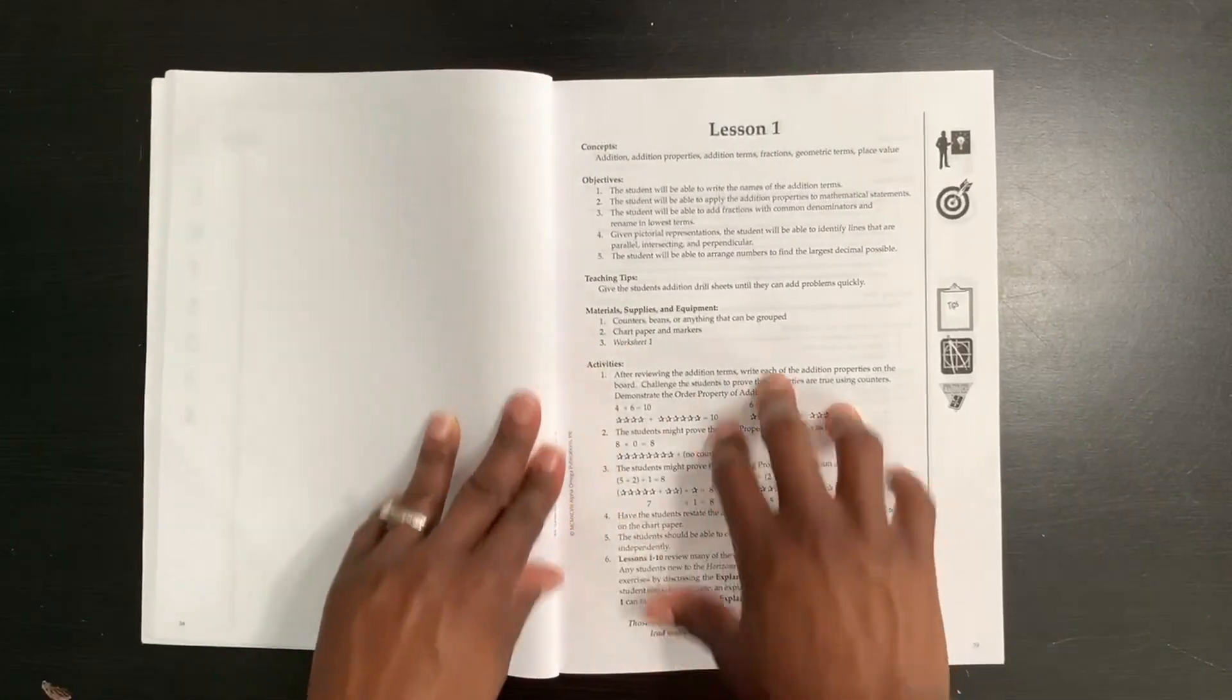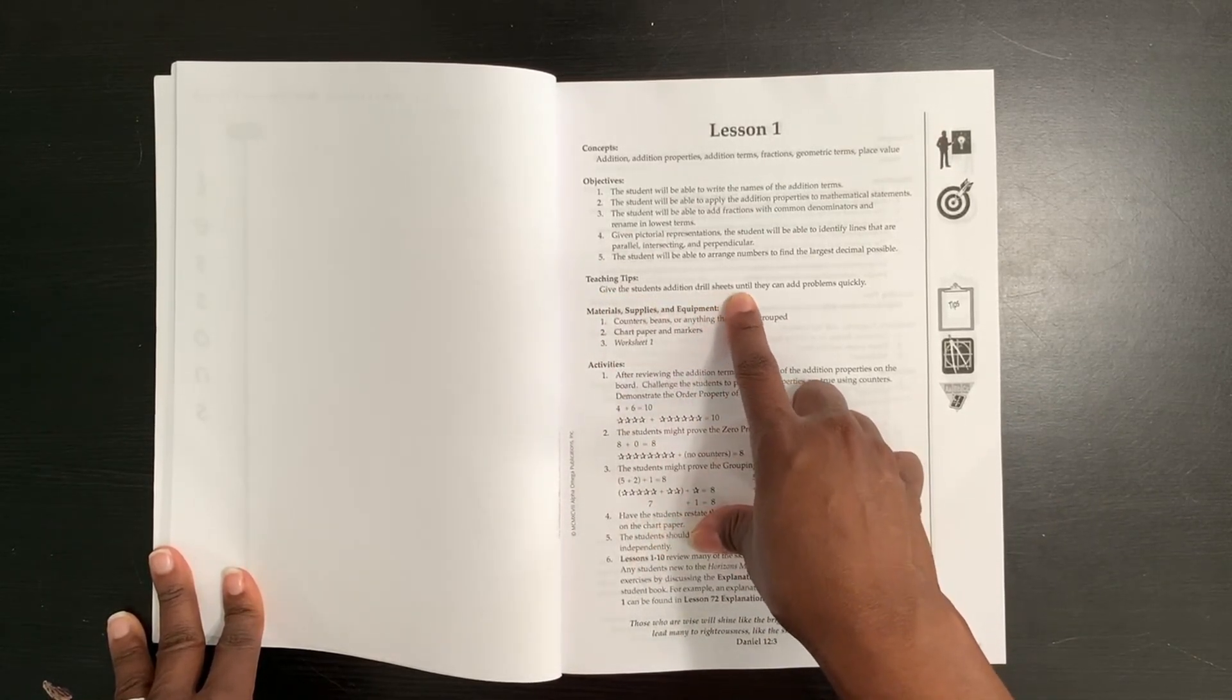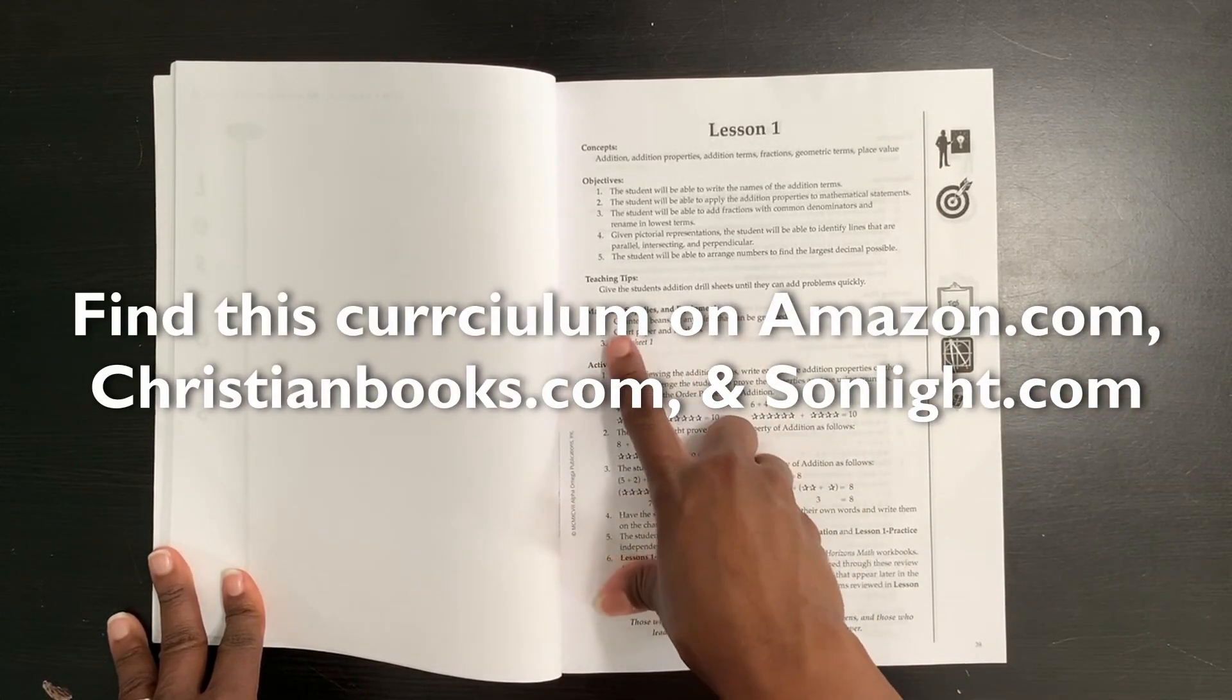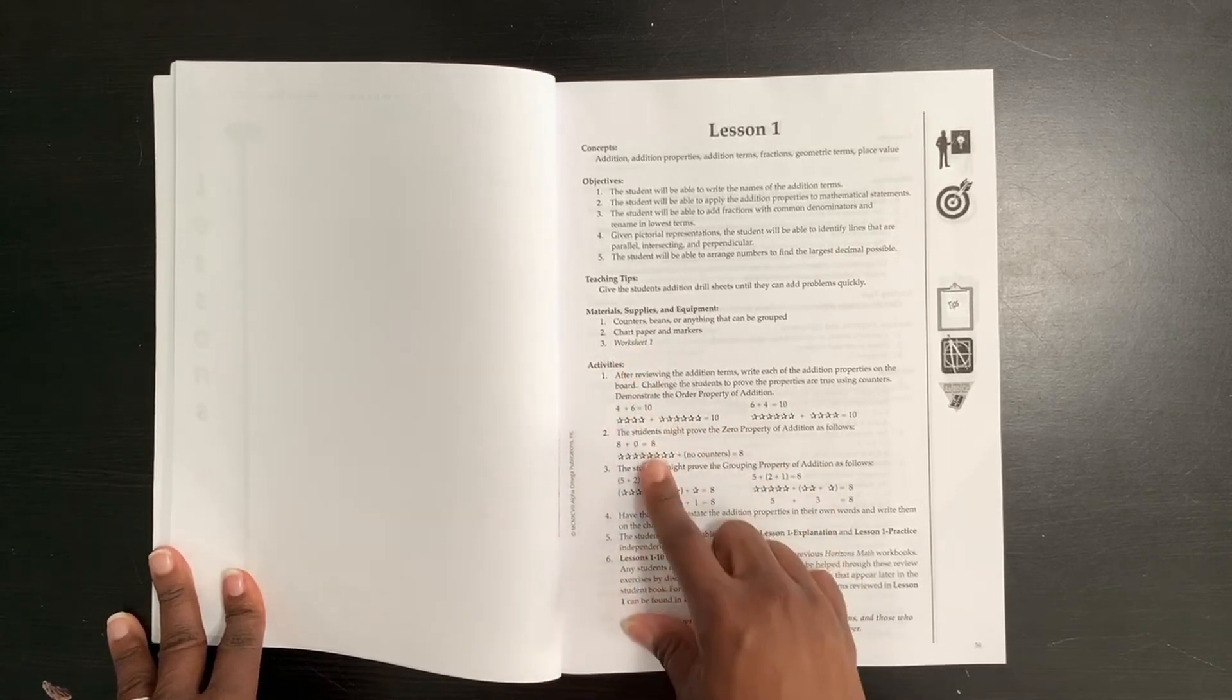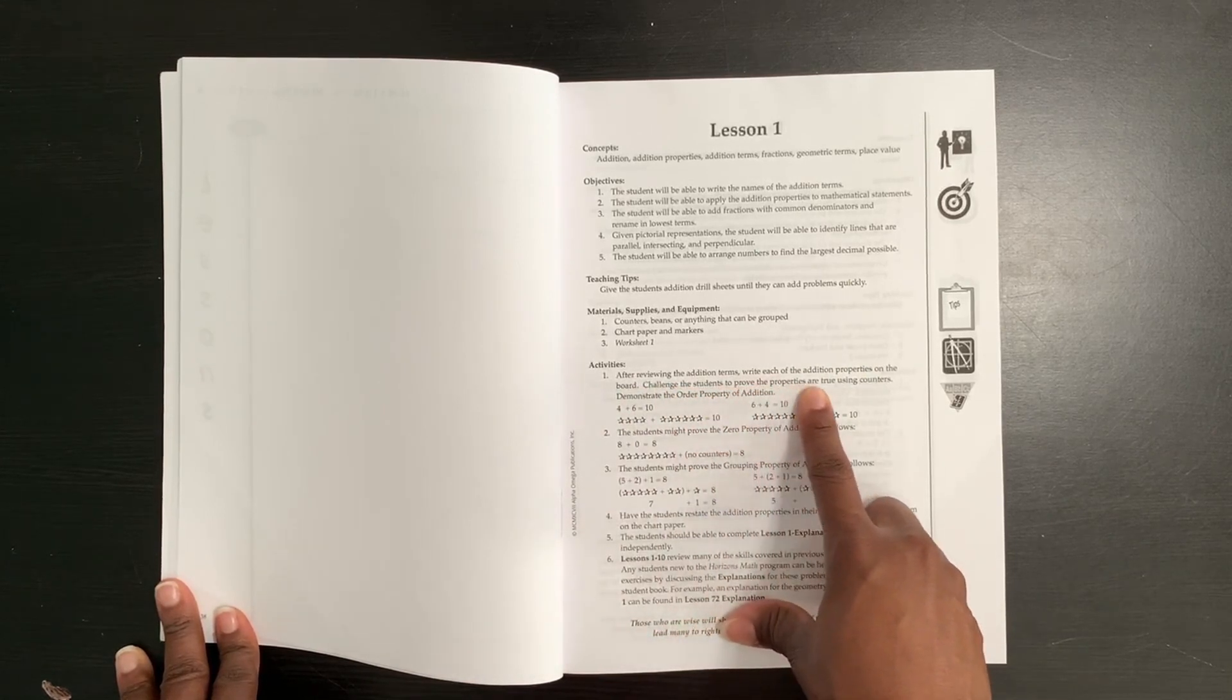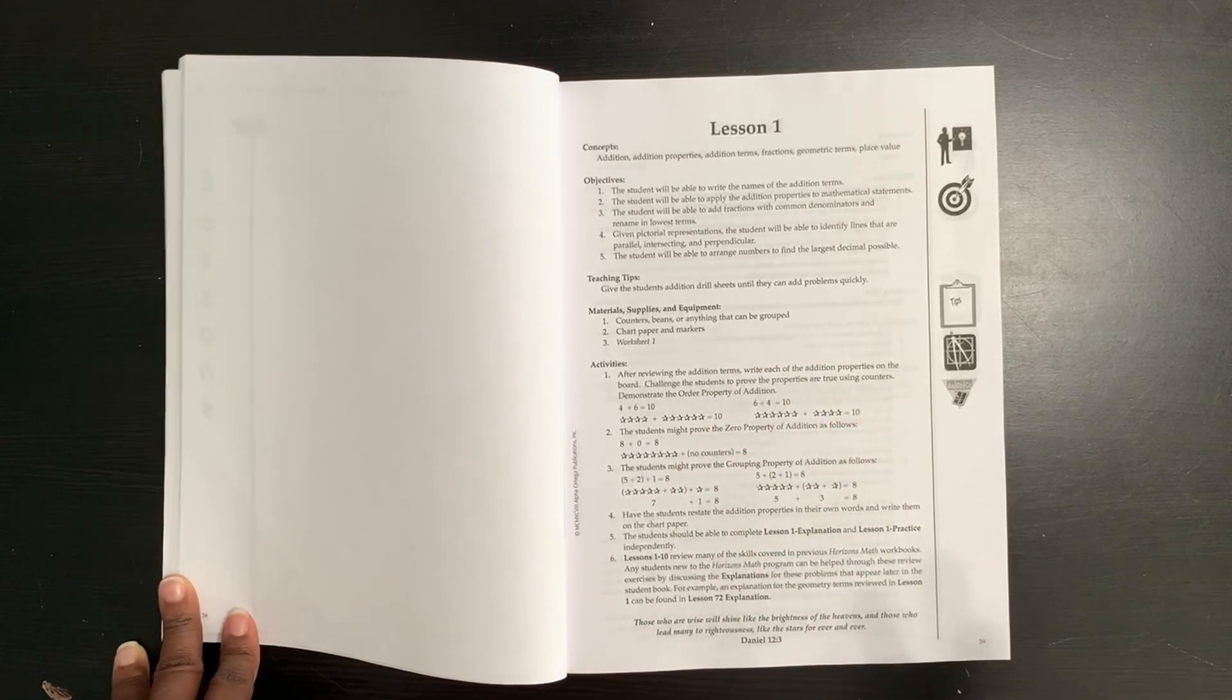Here is the development of concepts and this is grades three through six. I don't use this. It's a little confusing for me, but it kind of just tells you how they're progressing through the different concepts and what lesson number they're going to be doing it in. Then you hop right into your lessons. So lesson one, it's going to tell you the concept that you're going over. It's going to give you objectives. What's the purpose of this lesson? And then you're going to have teaching tips. This one says give the students addition drill sheets until they can add problems quickly. You're going to find addition drill sheets. There's actually one in here for lesson number one, but you can find those anywhere. You can get them online for free. Then material supplies and equipment. This one says you need counters, beans, or anything that can be grouped, a chart paper or markers, and then worksheet number one. Activities. This goes through the activities that your child will work on. It says after reviewing the addition terms, write each of the addition properties on the board. Challenge the students to prove the properties are true using counters. Demonstrate the order of property of addition. So you would go over this, and this is a different activity for you to do with your child as they're going through this.